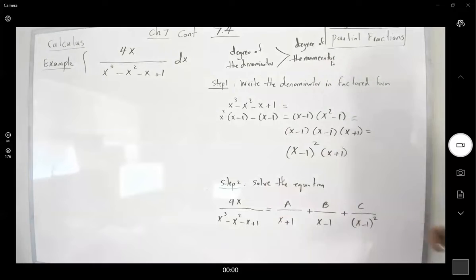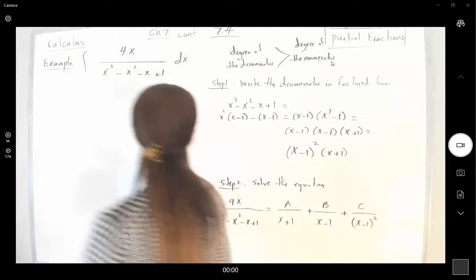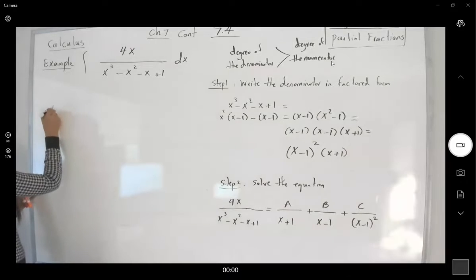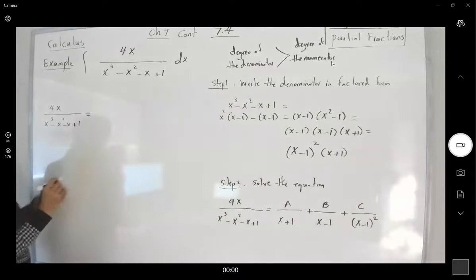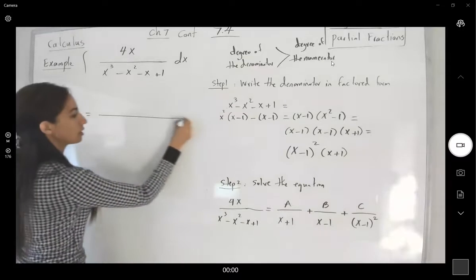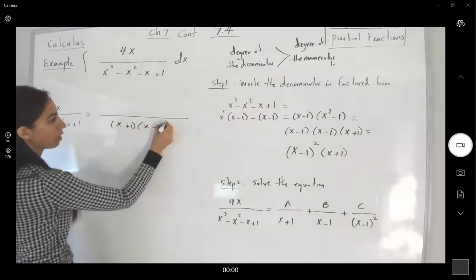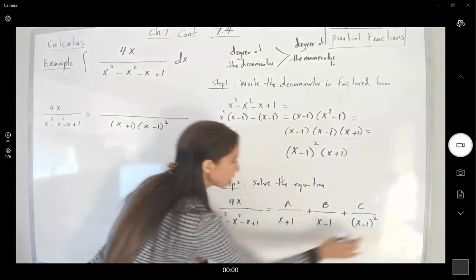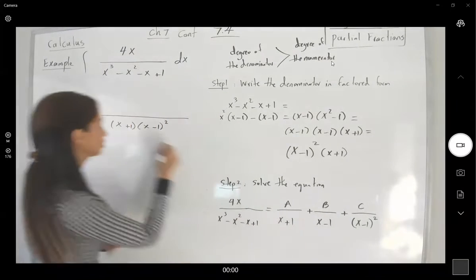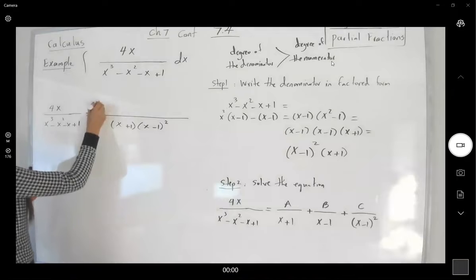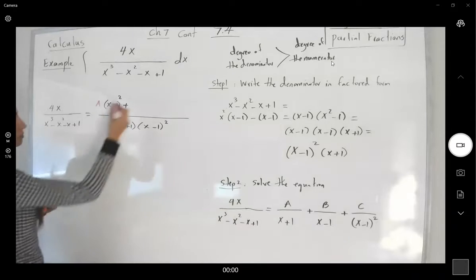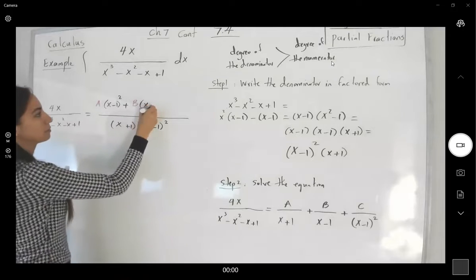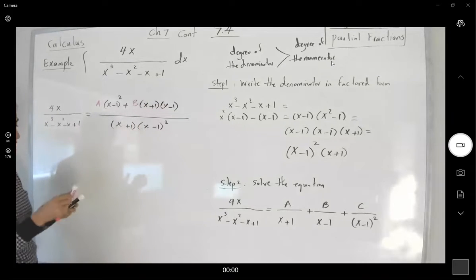Our job is to solve for A, B, and C. We have 4x divided by x cubed minus x squared minus x plus 1 on the left-hand side. On the right-hand side, taking the common denominator, it is (x plus 1) times (x minus 1) squared. The numerator becomes: A times (x minus 1) squared, plus B times (x plus 1) times (x minus 1), plus C times (x plus 1).